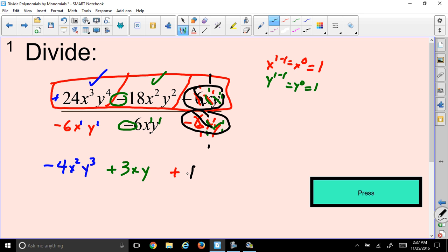So that gave us a positive 1. But if you felt like writing x to the 0 power, y to the 0 power, you may, but we don't have to. So our answer is going to be just negative 4x squared, y cubed, plus 3xy, plus, and we don't have to write x to the 0, y to the 0, because that's all being multiplied together by 1, and we'll just have positive 1.